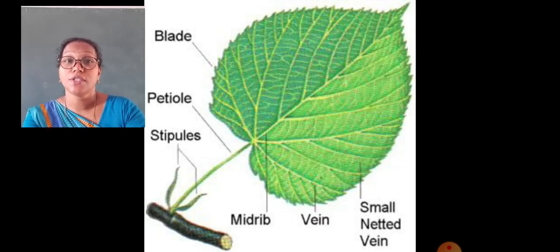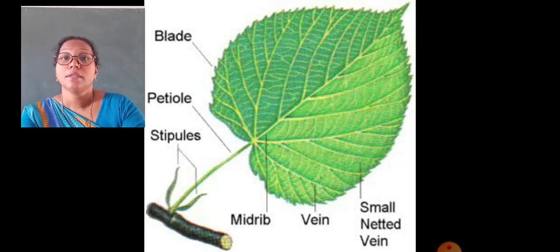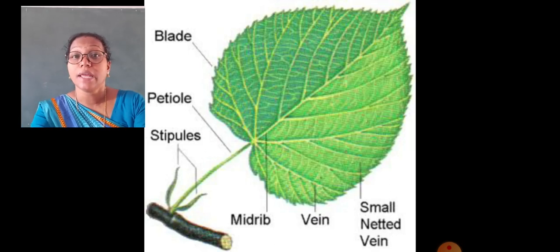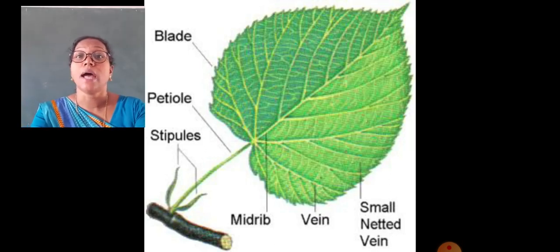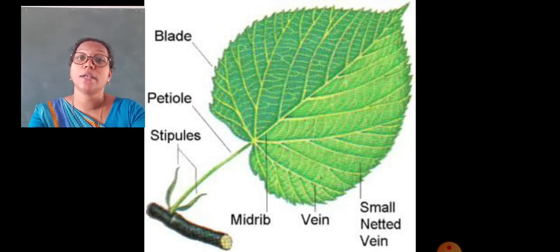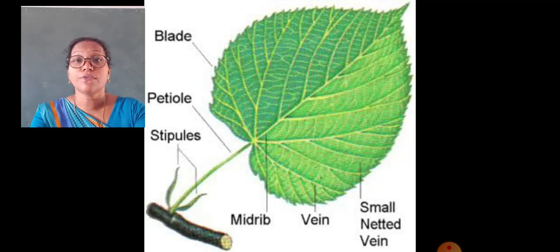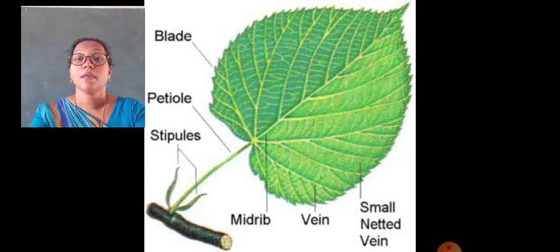The leaf attaches to the stem at the node. There are two green structures present in some leaves at the base of the stalk, that are called stipules. The stalk of the leaf that attaches the leaf with the stem is called the petiole.